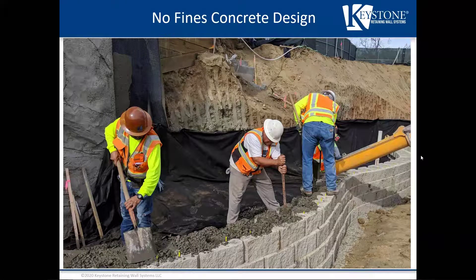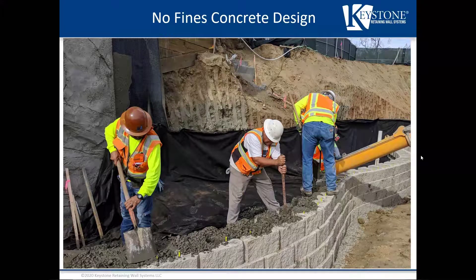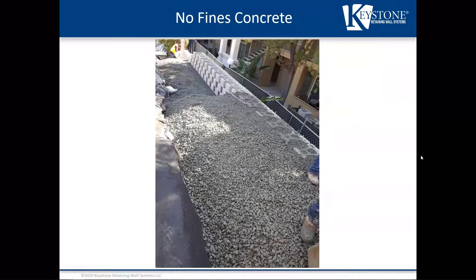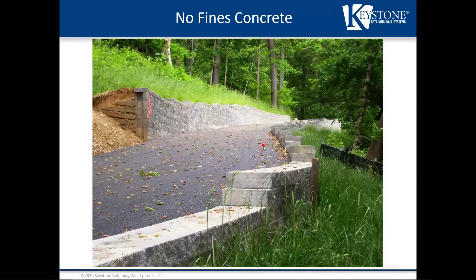When filling the block cores, the contractor rods the no fines into the block, ensuring all cores are properly filled. It's important to be consistent about cleaning off the top of the unit before allowing the material to harden, so construction sequencing must be appropriate for the block facing type. Filter fabric is wrapped around the no fines section. The finished wall cross-section shows the wall facing, the no fines concrete, filter fabric wrapped around it, and then eight inches of impervious material on top — just as in a standard wall design.